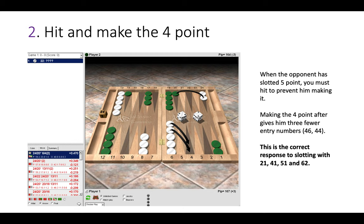Now the second rule is to hit if you have the opportunity and make the 4 point. So if the opponent plays an aggressive opening slot, then you must hit. And by making the 4 point, it just gives your opponent fewer entry numbers, as you can see on the right.